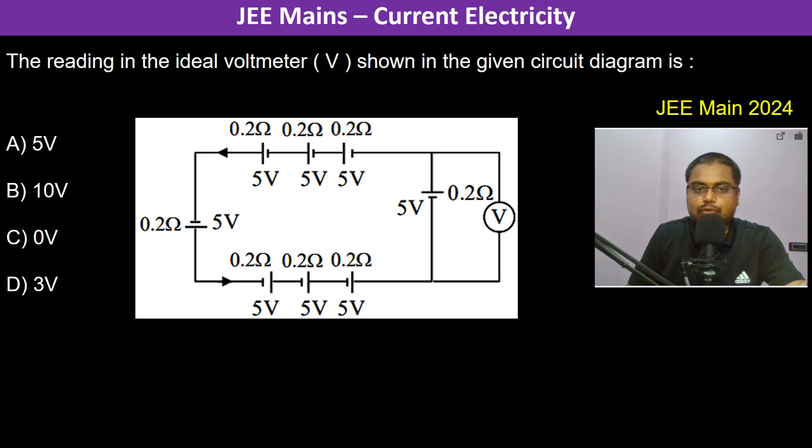The reading in the ideal voltmeter V shown in the given circuit diagram is... okay, so let us try it by Kirchhoff's loop law. Let us say that the current flowing in the circuit is I. So therefore now if we do this loop law...